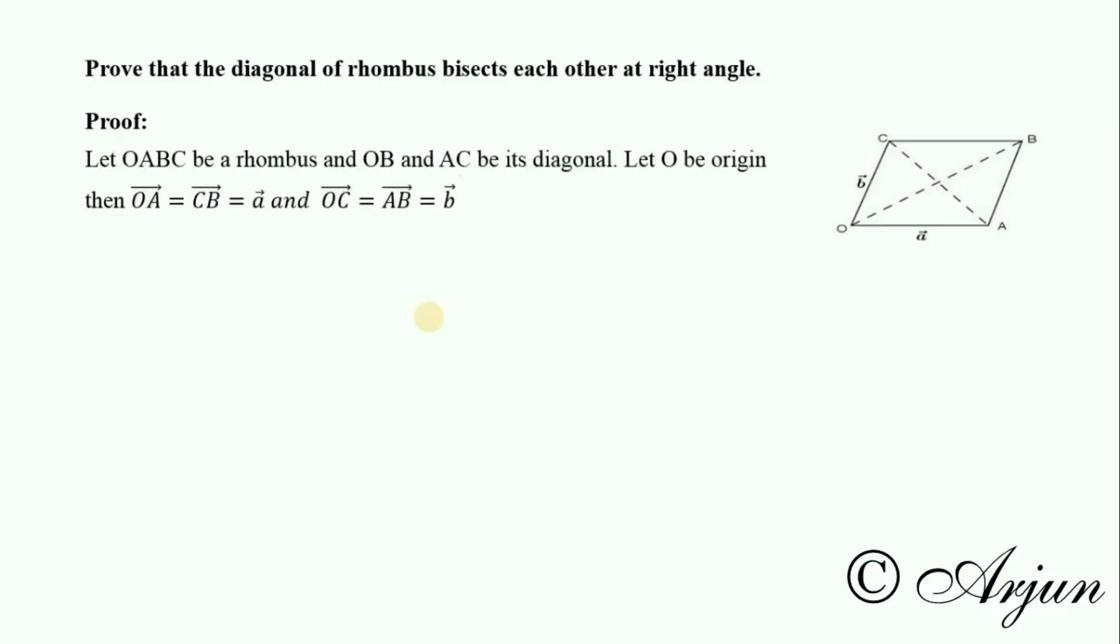Let OB and AC be the diagonals. Let O be the origin. Then OA equals CB, written as vector a, and OC equals AB, written as vector b.